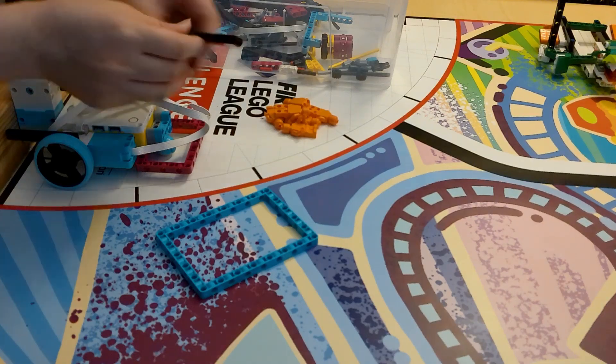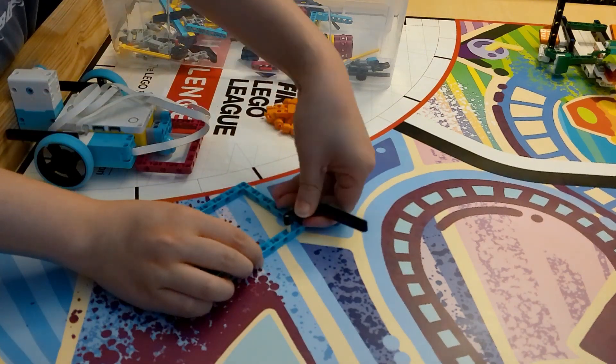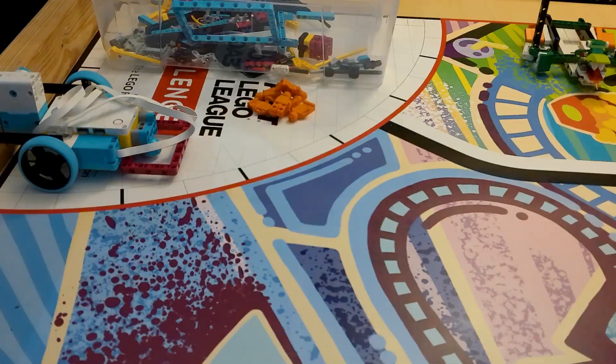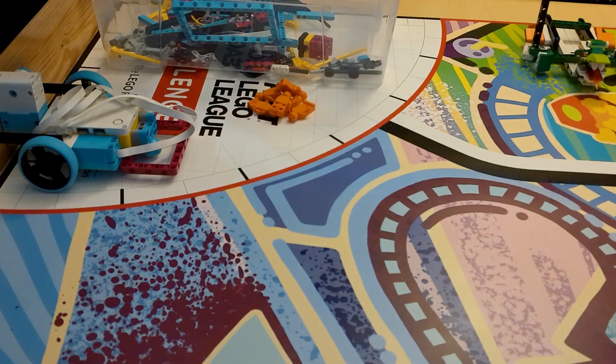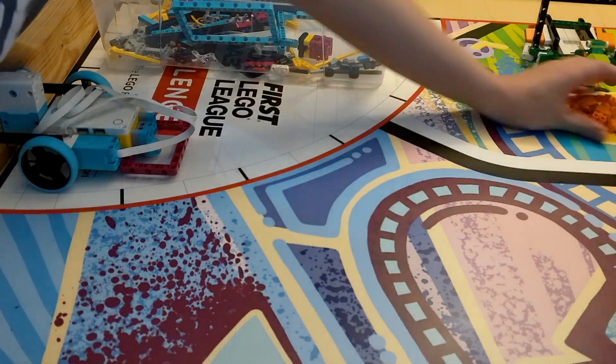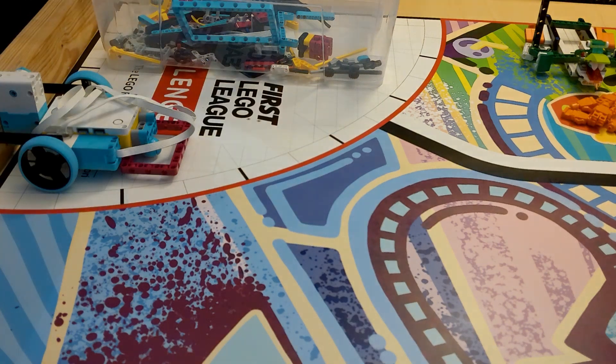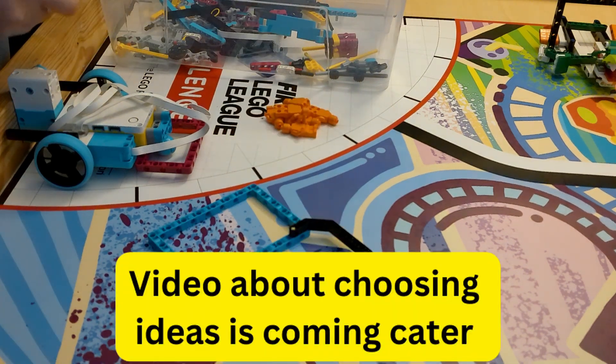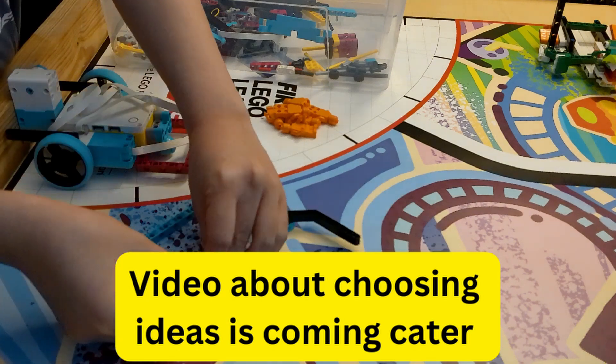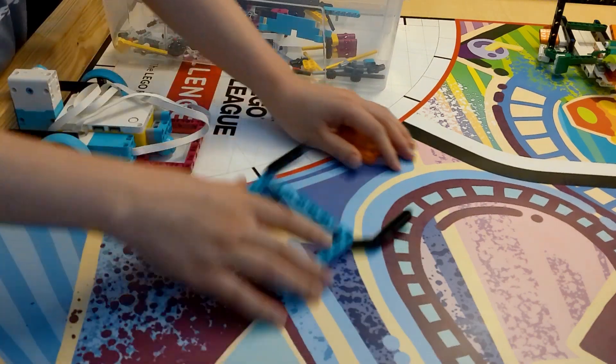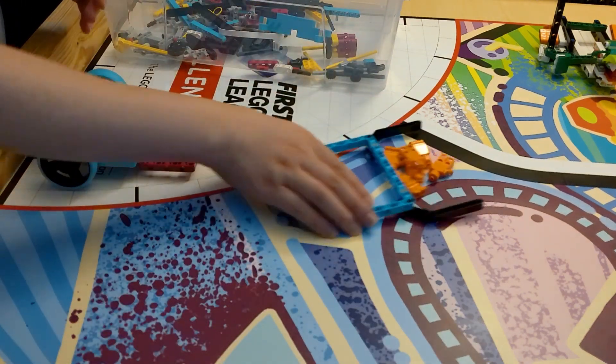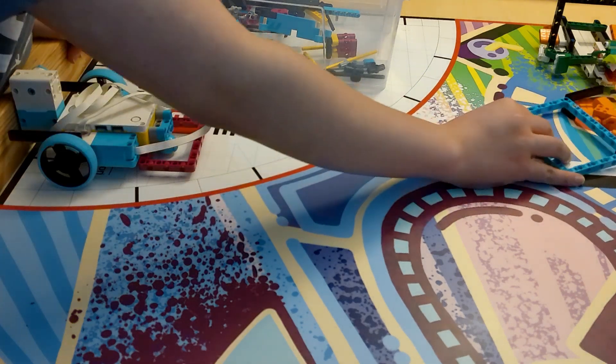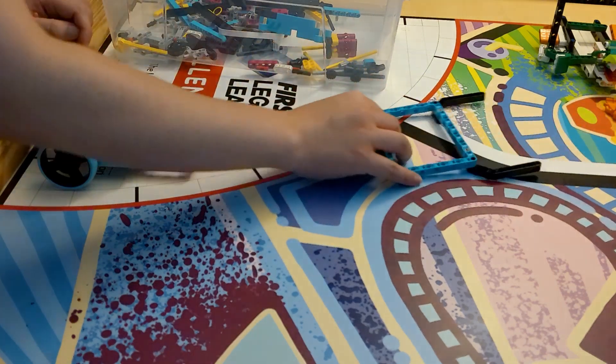We first need to make the manipulator, which is what the robot will use to score points. For this task we're going to push the audience members to the movie theater next to the west launch area. I will talk about how to decide what ideas to go with in a later video, but for this video we're going to make a plow which will push the audience members to the launch area.